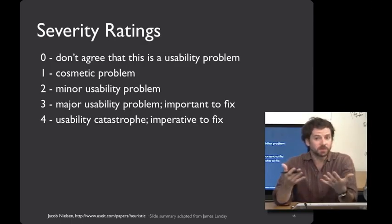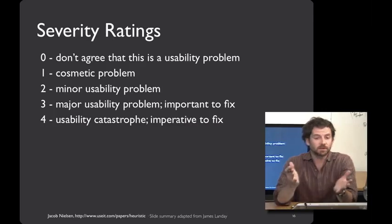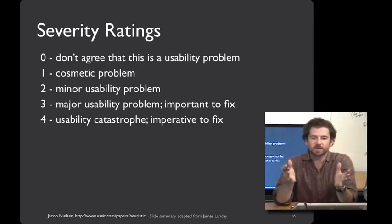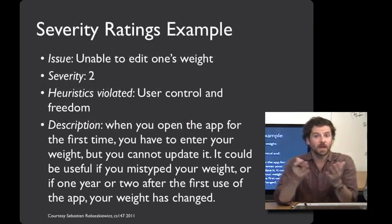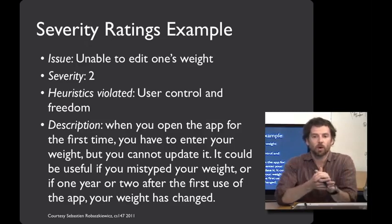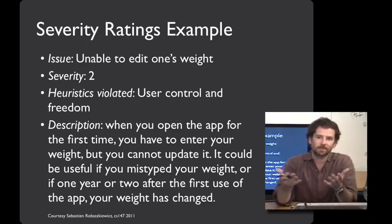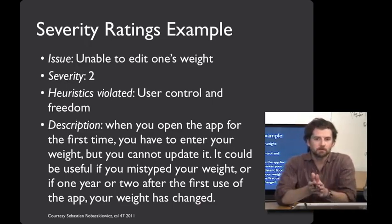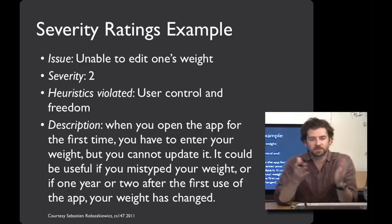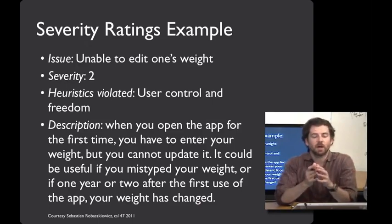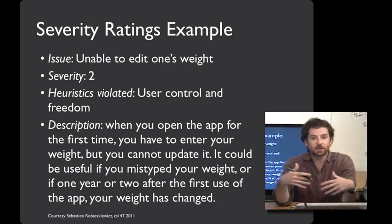Here's the severity rating system that Nielsen created — you can use anything you want, but it ranges from zero to four, where zero means at the end of the day it's not actually a usability problem, all the way up to something really catastrophic that has to get fixed right away. Here's an example: a student named Robby found a problem in somebody's mobile interface that had a weight entry element — once you'd entered your weight there was no way to edit it after the fact. He listed the issue, gave it a severity rating, noted the heuristic it violates, and described exactly what the problem is.